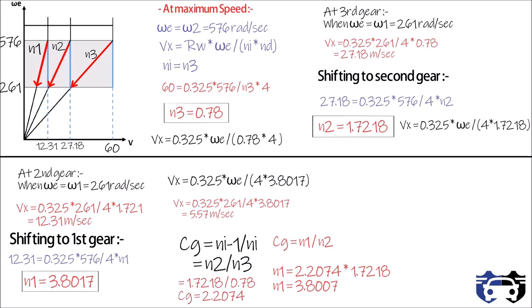So, just by knowing the engine's working range and the maximum vehicle velocity, you can easily design a gearbox by finding the stable gear ratios to achieve maximum speed. The difference between vehicle speed at two successive gears is called the speed span, given by delta vi equals vi minus vi minus 1.